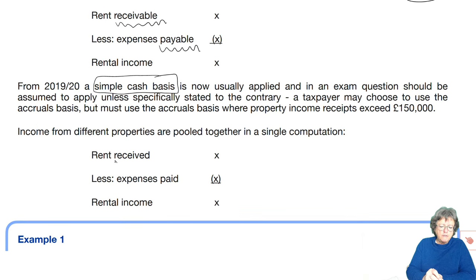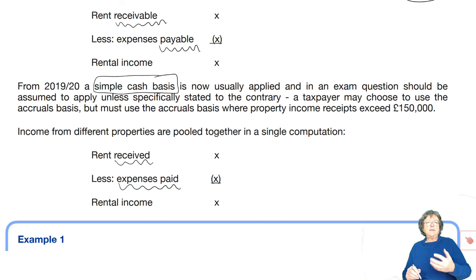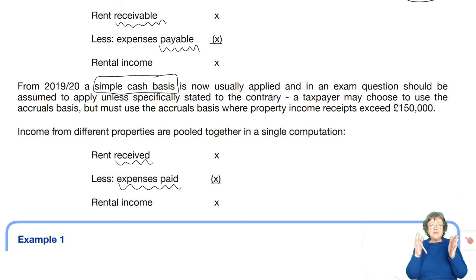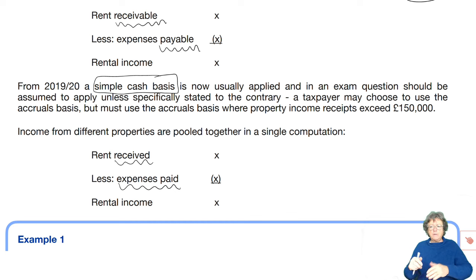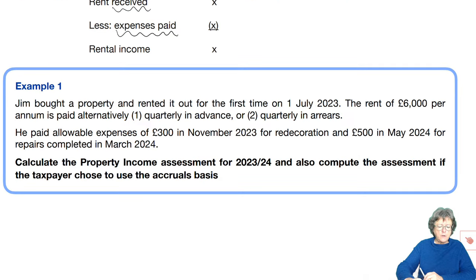On the cash basis, it's rent received and expenses paid — so it's actually what is happening, rather than what might happen or what has happened. What did you actually get in that tax period? What did you actually pay in that tax period? We have an example here that helps us go through this.